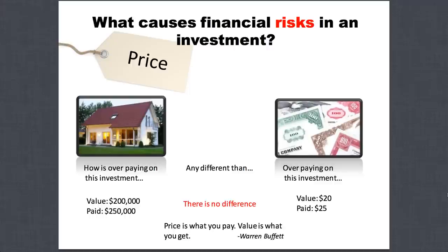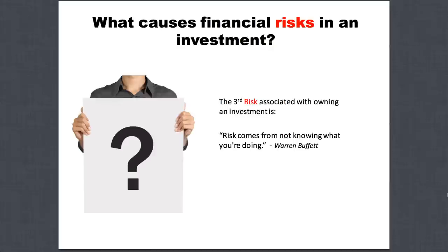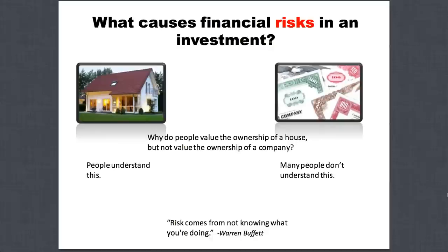The third risk associated with owning an investment is that risk comes from not knowing what you're doing — it's that simple. Why do people understand the value of a house but not the value of a company? People understand the home, but they don't understand the value of a company, and they especially don't understand it when it's broken down into individual shares split into 10 million pieces. If you're out there buying shares and never looking at what they're worth — just buying because you like a company — you're probably setting yourself up to buy the $250,000 house even though it's worth $200,000. Risk comes from not knowing what you're doing.